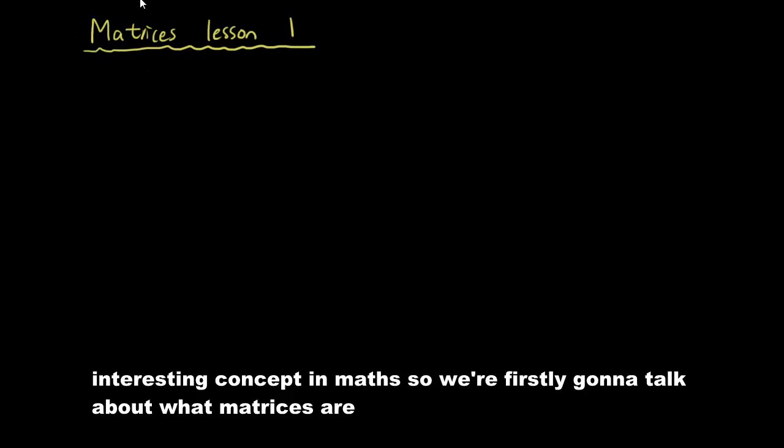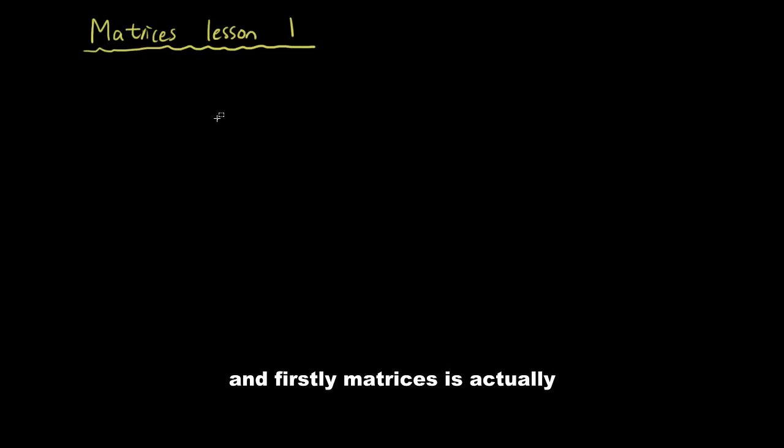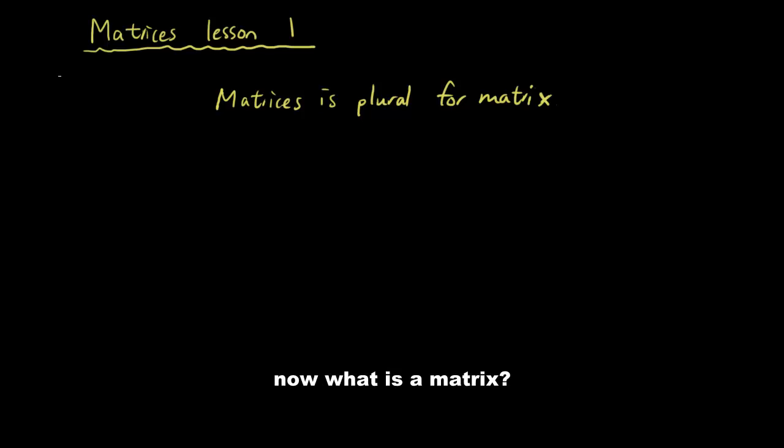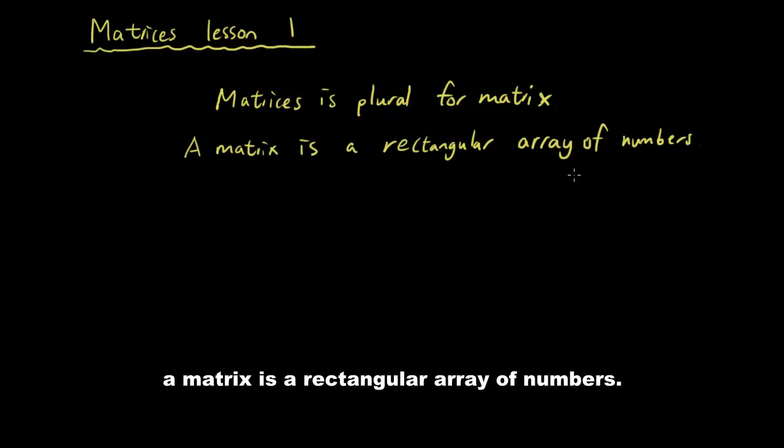So we're firstly going to talk about what matrices are. And firstly, matrices is actually plural for the word matrix. So matrix is singular, matrices is plural. Now what is a matrix? A matrix is a rectangular array of numbers.